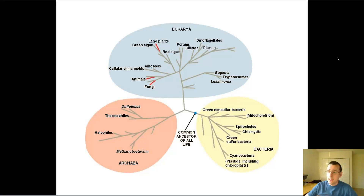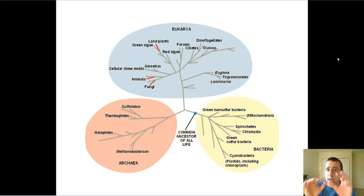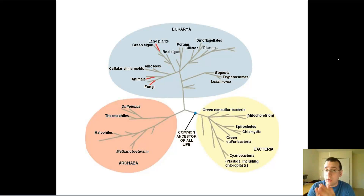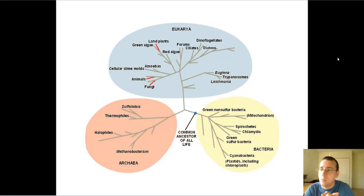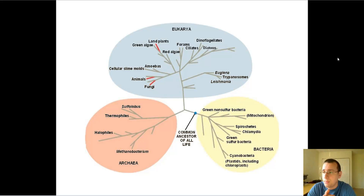Likewise, scientists have developed a hierarchy of life to help categorize organisms in ways that actually establish relationships between them, especially in terms of trees of life like the ones you see here, which actually help us understand the evolutionary relationship between them and therefore understand how life actually works.